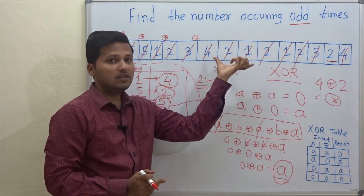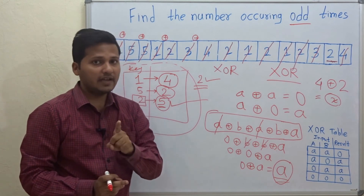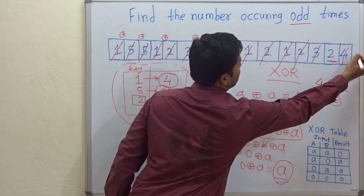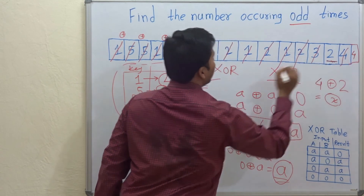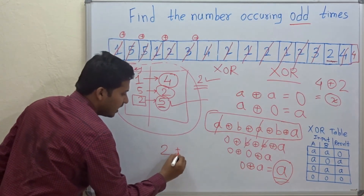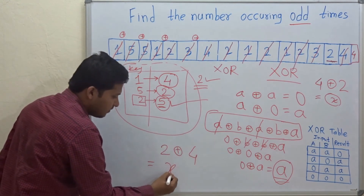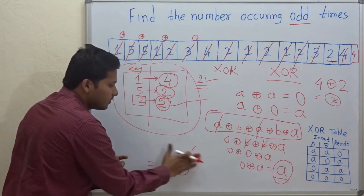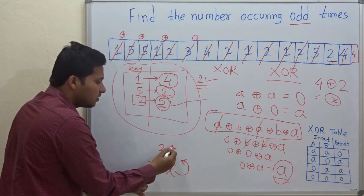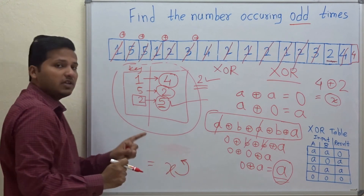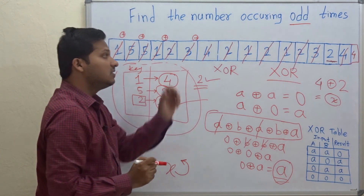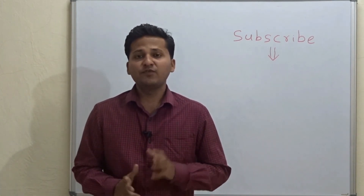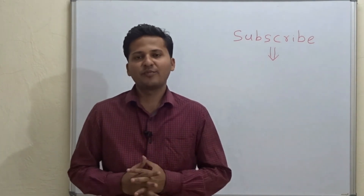Remember, you can use this method only when there is exactly one element in the array occurring odd number of times. If more than one element occurs odd number of times — for example, if there is an extra 4 in the array — then 2 and 4 both remain, and the final answer will be 2 XOR 4, some value X. You cannot reverse-engineer X to find the individual elements. So this XOR method works efficiently only when exactly one element occurs odd number of times. Please subscribe to my channel as I post algorithm videos every day, and mention any topic in the comments below. Thank you.